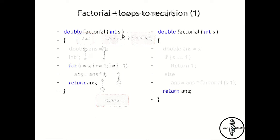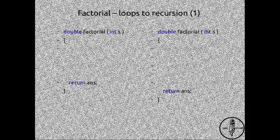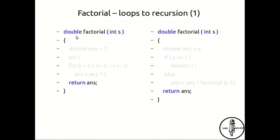Now let's consider the factorial function written in both forms. The iterative loop version is on the left hand side and the recursive function is on the right hand side. On the outside they really look the same: both are declared as double factorial with integer s, and the answer is stored in the variable ans.